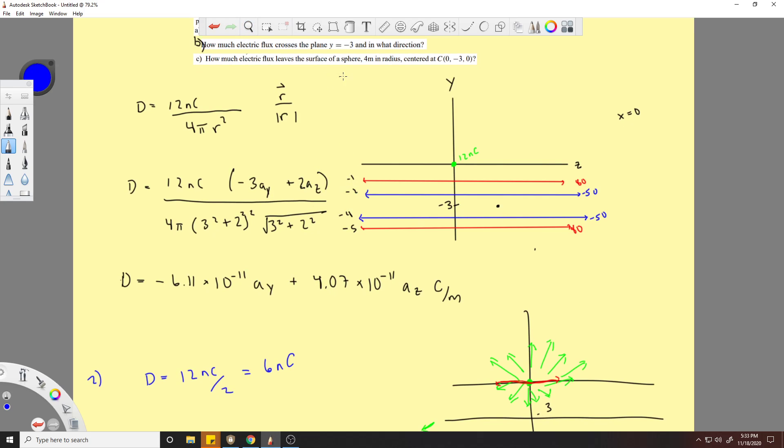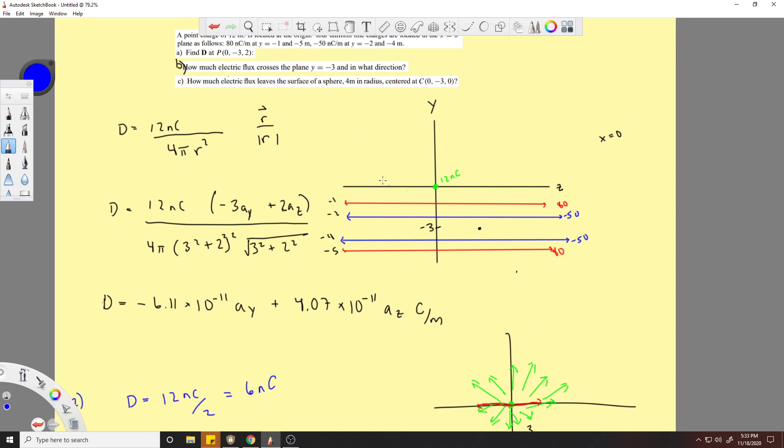How much electric flux leaves the surface of a four meter radius centered at c equals zero? This is where things get a little tricky. Basically the question is asking what would happen if we had a circle with a radius of four. I'm going to draw out this circle below to make it less busy. I'm going to take out these two lines and use these two lines and multiply them by two because that'll do the same thing in terms of how much charge is inside the sphere.